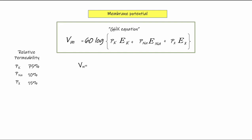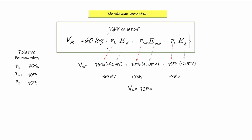Let's look at how changing relative permeability affects membrane potential. Given relative permeabilities of potassium at 75%, sodium at 10%, and ion X at 15%, we plug those into the GHK equation along with the equilibrium potential for each ion. Doing the math gives us a resting membrane potential of negative 72 millivolts for this cell.